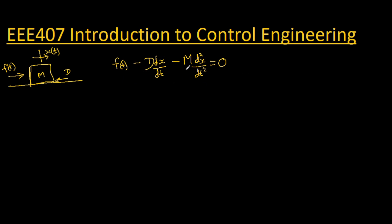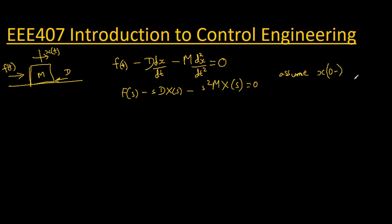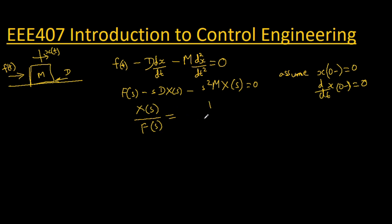Assuming zero initial conditions — meaning x(0⁻) = 0 and dx/dt(0⁻) = 0 — taking the Laplace transform gives us F(s) − sD·X(s) − s²m·X(s) = 0. From this, the transfer function of the system, output displacement over input force, is simply 1/(s²m + sD).